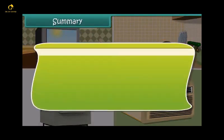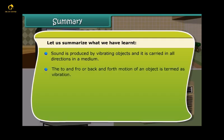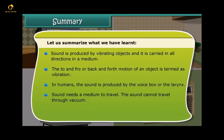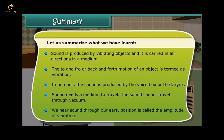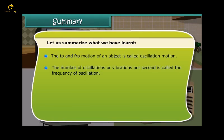Summary. Let us summarize what we have learned. Sound is produced by vibrating objects and it is carried in all directions in a medium. The to and fro or back and forth motion of an object is termed as vibration. In humans, the sound is produced by the voice box or the larynx. Sound needs a medium to travel. The sound cannot travel through vacuum. We hear sound through our ears. Position is called the amplitude of vibration. The to and fro motion of an object is called oscillation motion. The number of oscillations or vibrations per second is called the frequency of oscillation. The frequency of a body is expressed in hertz.